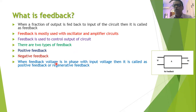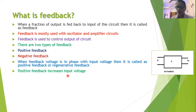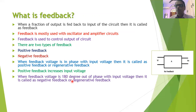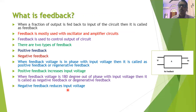When the feedback voltage — that is, the voltage coupled to the input — is in phase with the input voltage, meaning the phase difference between the input voltage and feedback voltage is zero degrees, then such feedback is called positive feedback or regenerative feedback. Positive feedback will increase the input voltage because the feedback voltage is in phase with the input voltage. But when the feedback voltage is 180 degrees out of phase with the input voltage, then such feedback is called negative feedback, also known as degenerative feedback. Negative feedback will reduce the input voltage since the feedback voltage and input voltage are out of phase with each other.